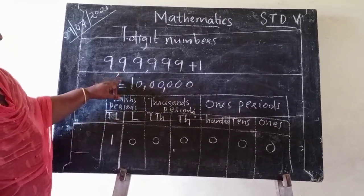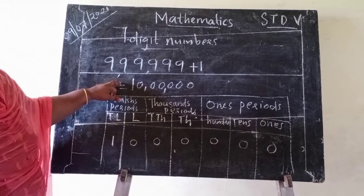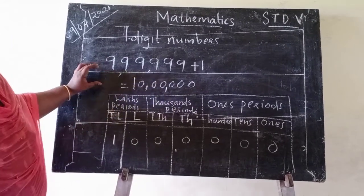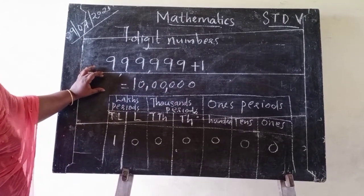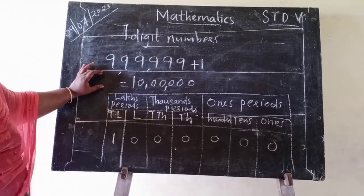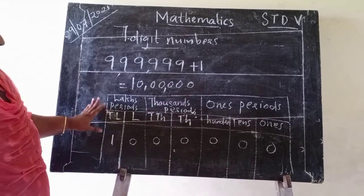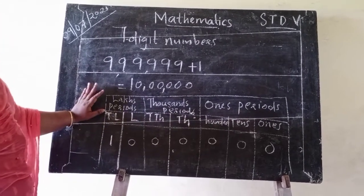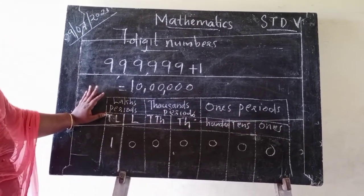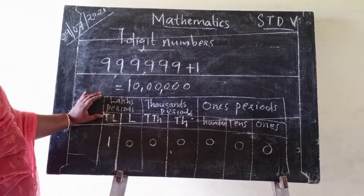Another way to read this number: the number is ten lakhs. This is the representation of ten lakhs in a placement chart.